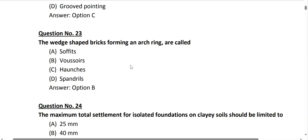Question number 23: the wedge-shaped bricks forming an arch ring are called voussoirs. These are very important elements in arch construction. So the answer is voussoirs — the wedge-shaped bricks used in forming an arch ring.